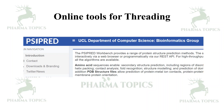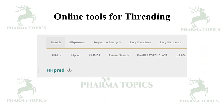Another threading software is HHpred, an online tool where you can search proteins, perform sequence alignment and analysis, build 3D structures, and run protein BLAST. There are several options available in this software. This has been a brief introduction to the threading method, which is tougher compared to homology modeling.